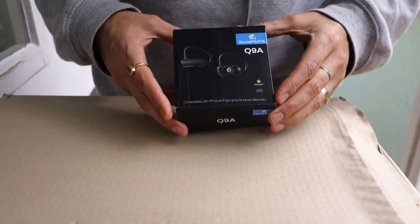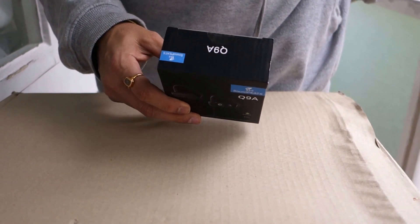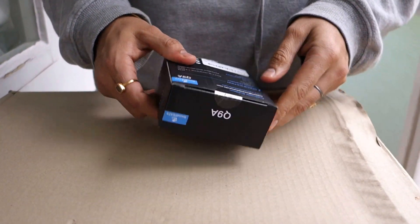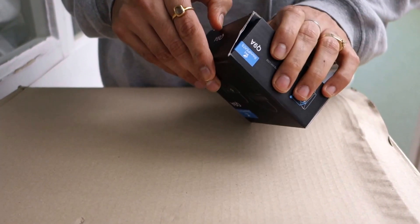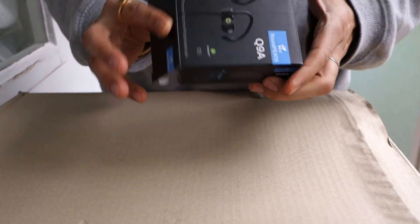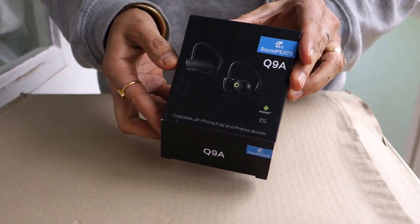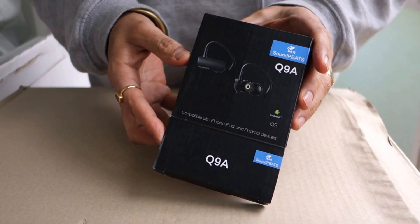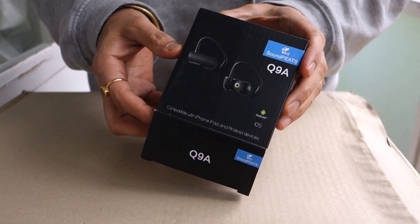All right, these are SoundPEATS Q9A Bluetooth wireless headphones. Let's get started. This is how it comes - you might see it in a brown box. The first time I purchased them I got the brown box, and next time they came in the black box. I prefer the black box much better.